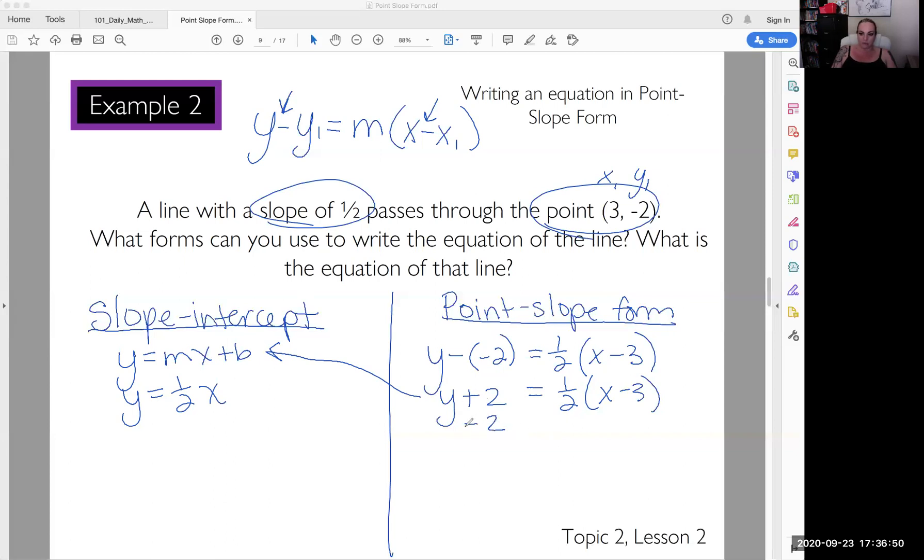So we're going to isolate y. Let's subtract 2 on both sides. We get y equals 1 half times x minus 3 minus 2. Now let's distribute, because this does not have parentheses, we want to distribute that. So we get 1 half x, half of negative 3 is negative 1 and a half, minus 2.